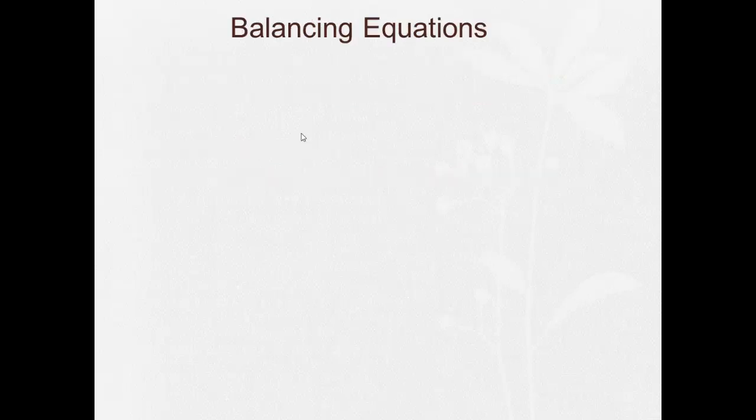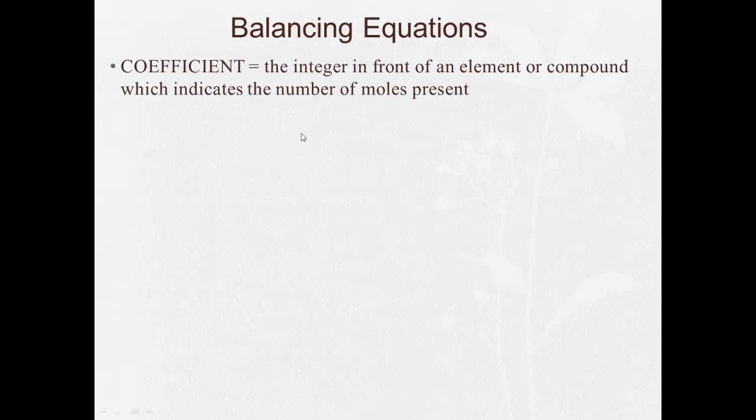So a couple of terms to go through when we're talking about balancing equations. First one is the coefficient. That's the integer in front of an element or compound which indicates the number of moles present. So for example, let's take hydrogen in nature. Hydrogen is H2, it's a gas, plus oxygen O2, which is a gas. I'm going to make water, and let's just say it's liquid water. And the number that goes in front of each of these is the coefficient. Now, if there's nothing there, it's understood to be a one. So right now, each of these has a coefficient of one.